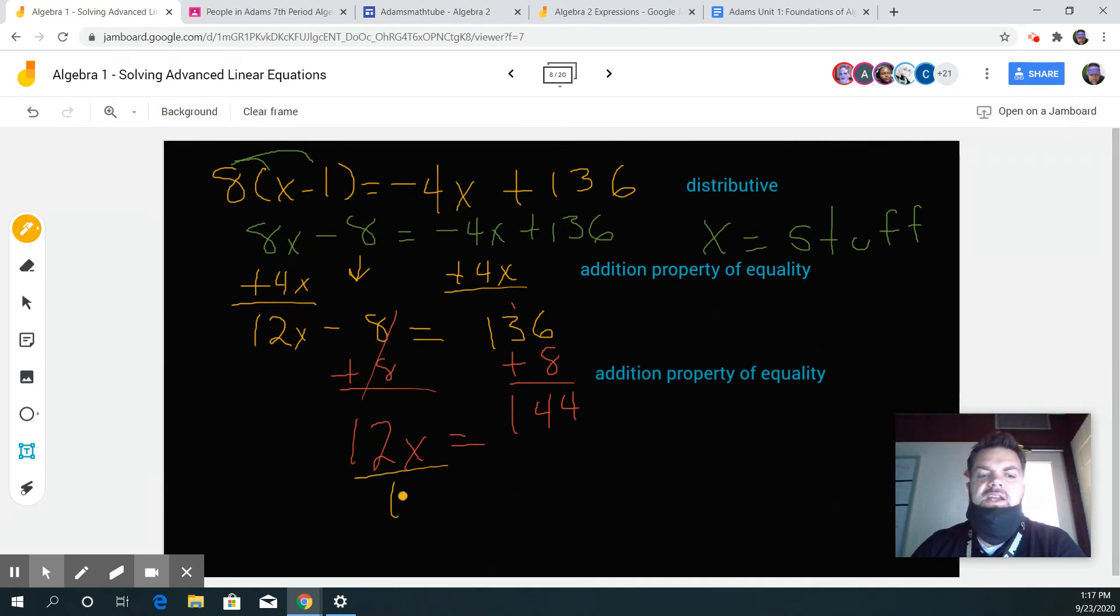Divide by 12. I want to get the 12 away from the x. 12x means 12 times x. To get the 12 away I do the opposite of multiply, so I divide. Whatever I do on one side I do on the other. By the way, what property did I just use? I used the division property of equality.